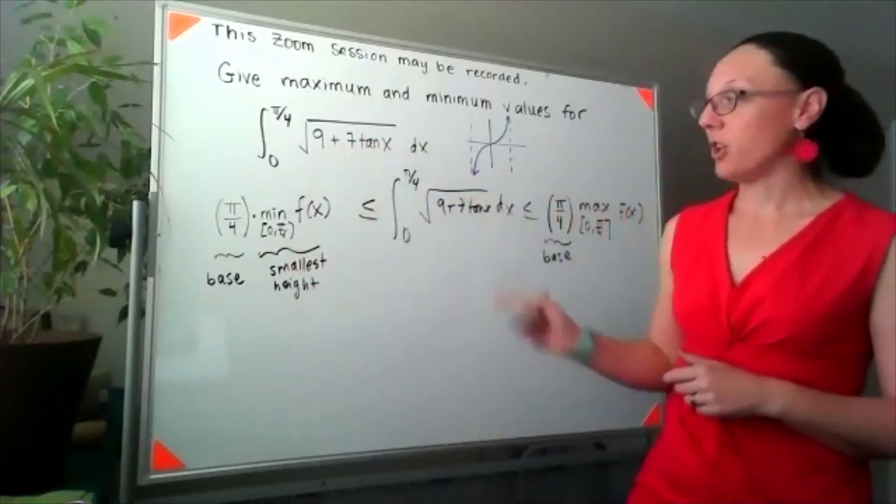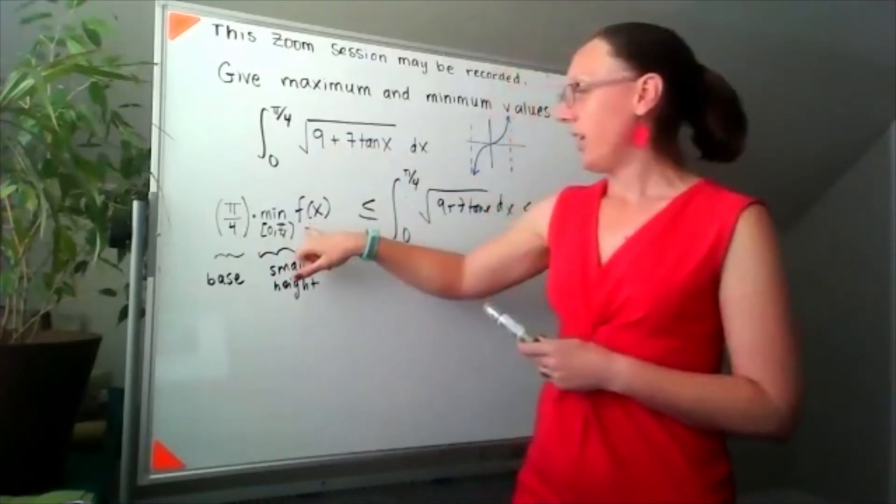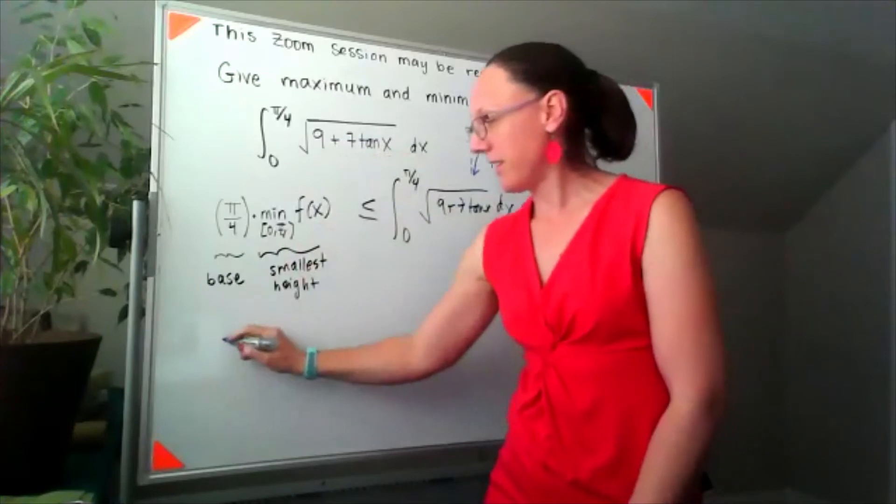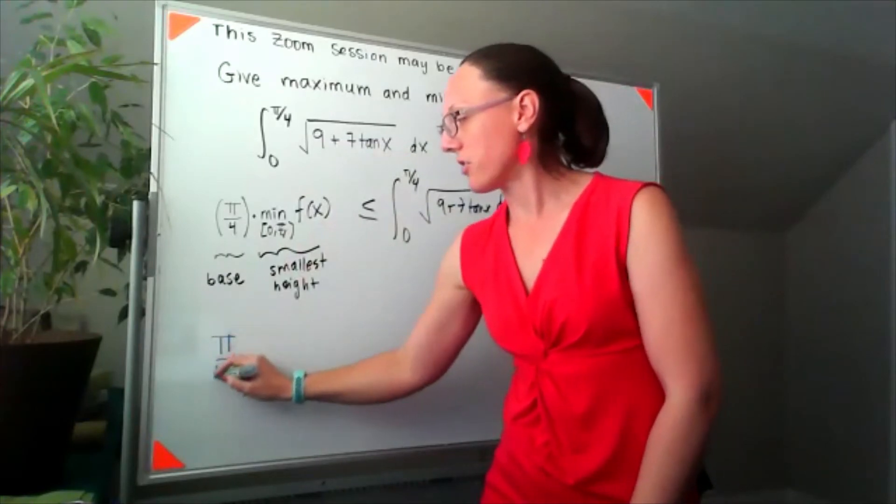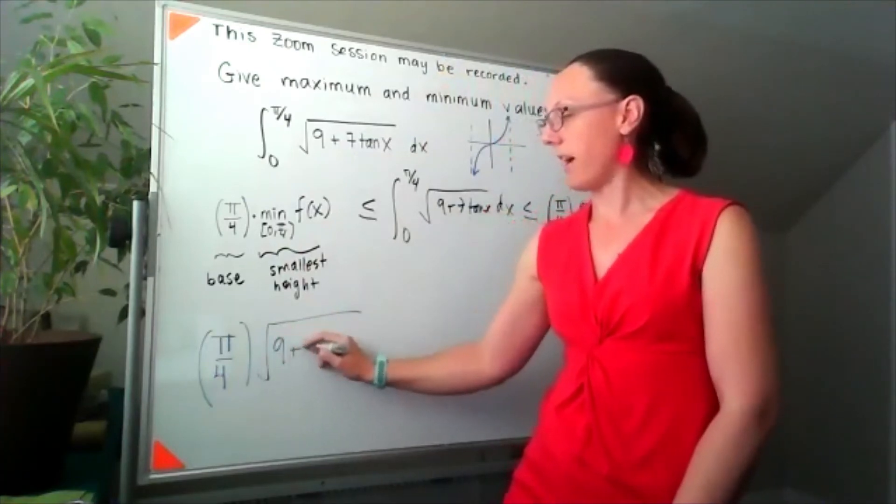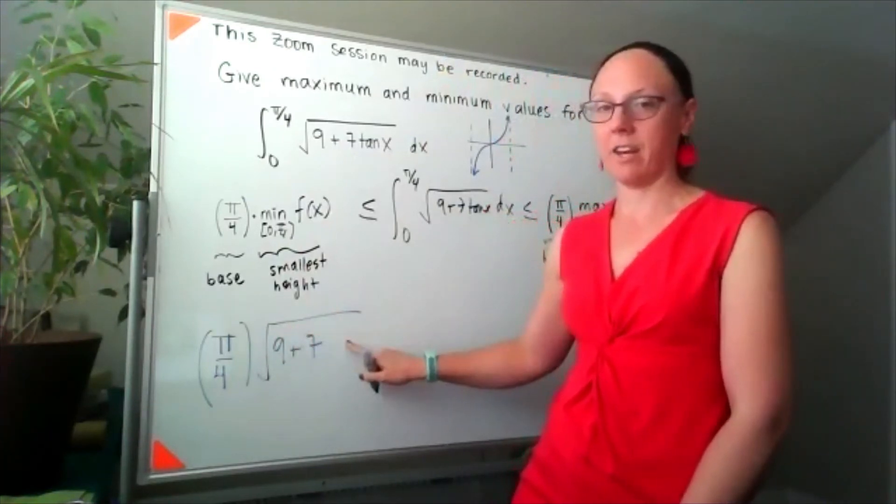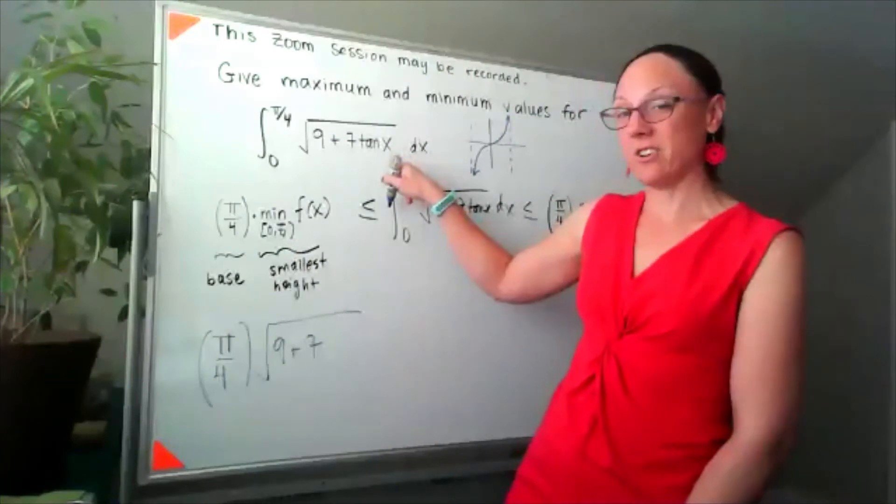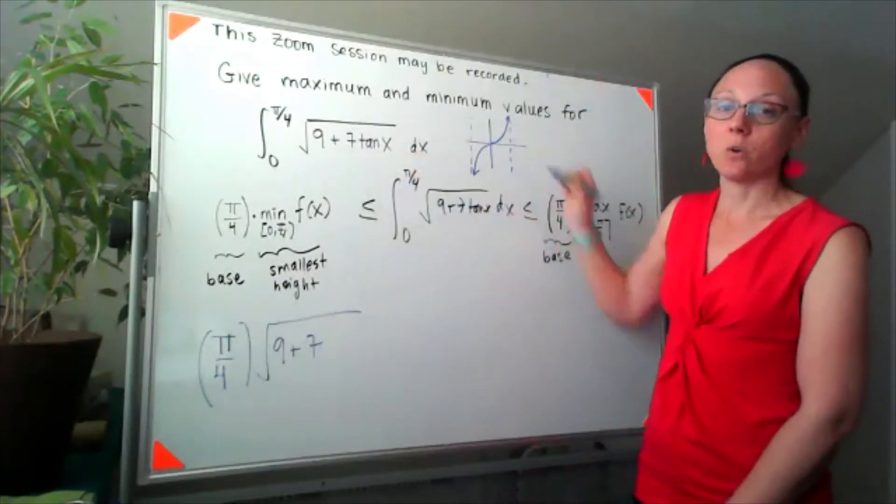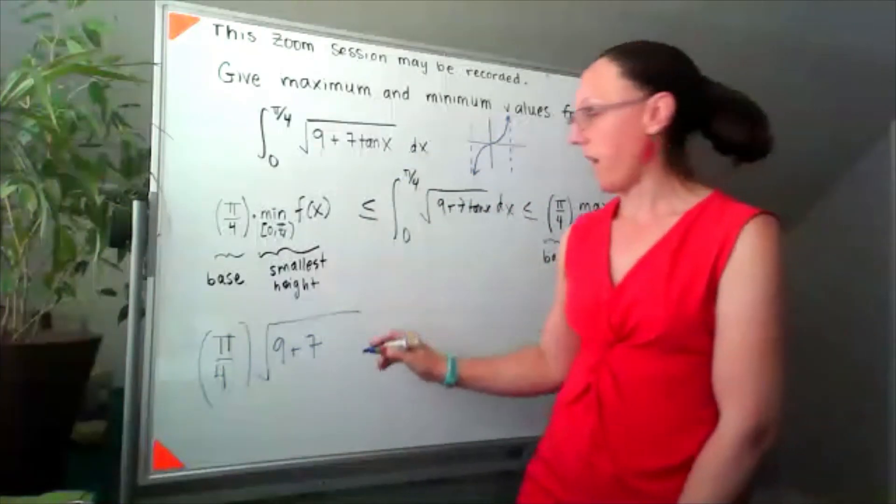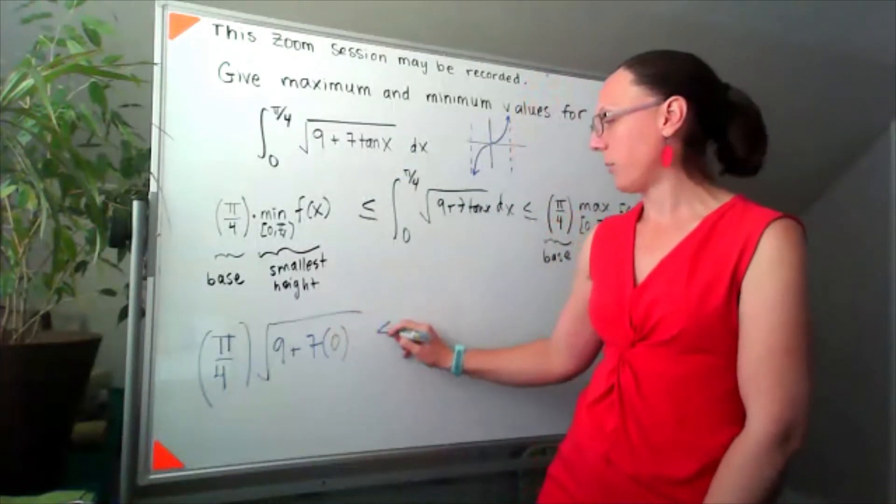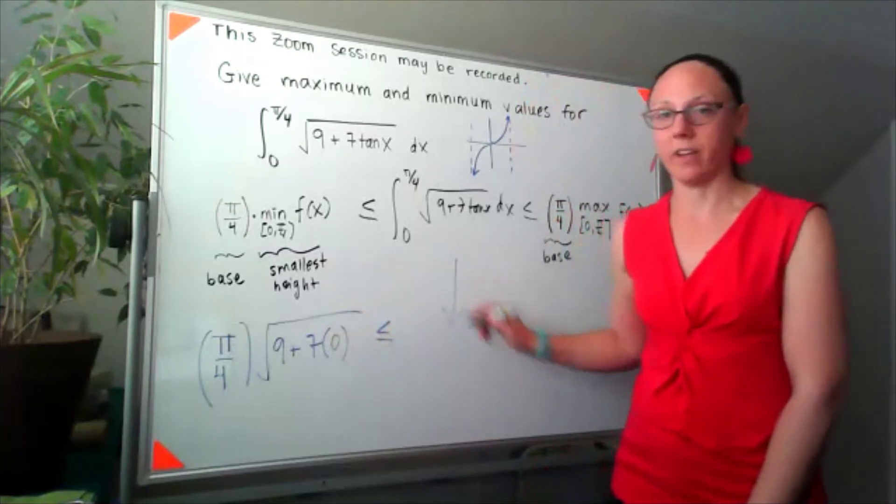Making my lower bound, if I plug in zero for x, that lower bound is going to turn into pi over four times the square root of nine plus seven times the tangent of zero. If I think about my graph over here, tangent goes through zero zero, so that would be zero for tangent of x.